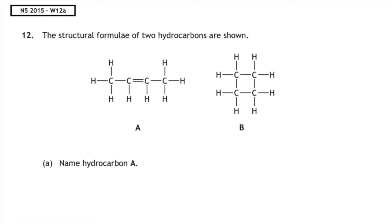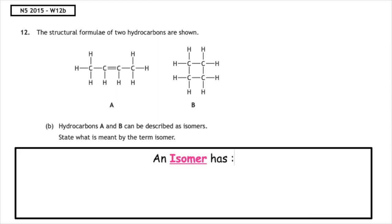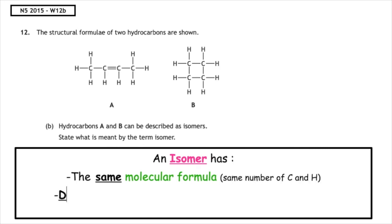This past paper question is from National 5, 2015, written 12A. The structural formula for two hydrocarbons are shown — name hydrocarbon A. We need to look for the longest chain including the functional group, the carbon-to-carbon double bond. We number those one to four on the top line and one to four backwards on the bottom line, and put a box around the carbon-to-carbon double bond. The lowest position it can be at is position two. Part B asks us to state what is meant by the term isomer: an isomer has the same molecular formula but a different structural formula.